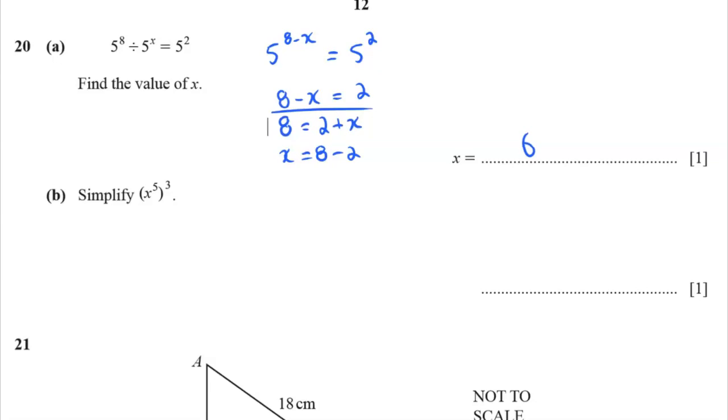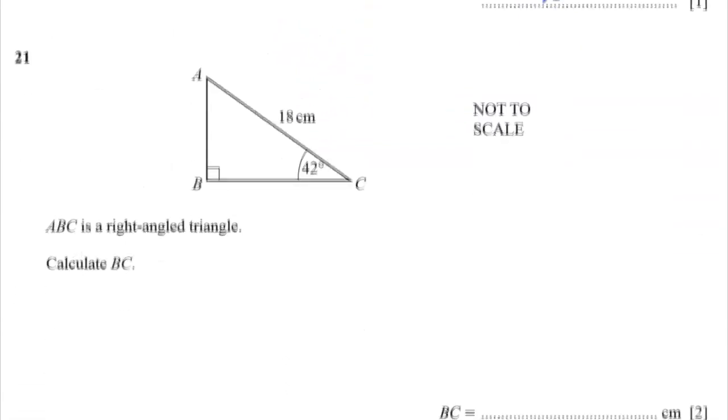Simplify 5 to a power raised to another power. When you have a power raised to a power, you multiply them and 3 times 5 is 15.